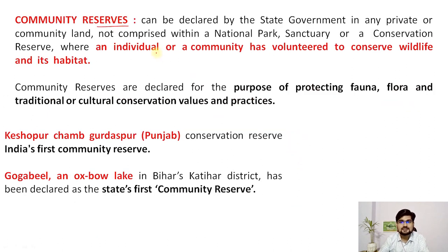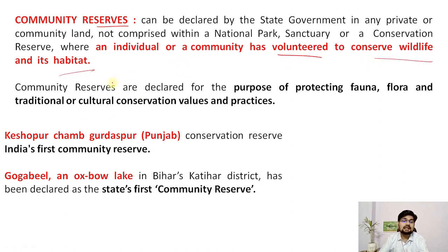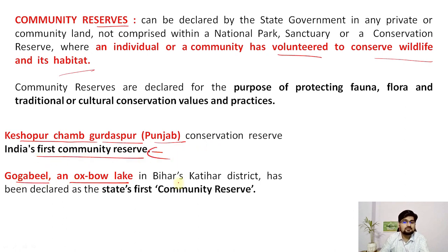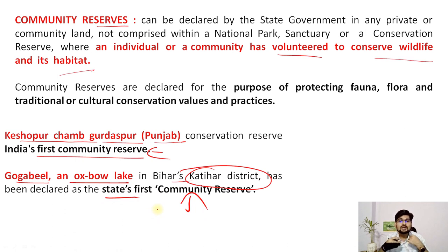Community reserves are another form of in-situ conservation where individuals or communities volunteer to conserve wildlife in its habitat — a people's initiative. India's first community reserve was created at Keshapur-Miani, Gurdaspur, Punjab. Gogabil, an oxbow lake in Bihar's Katihar district, has been declared the state's first community reserve, with the community protecting that land in compliance with the state government.